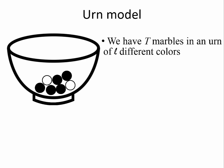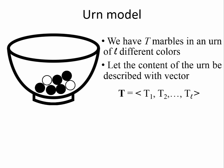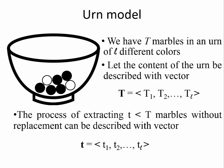Consider an urn containing big T marbles of L different colors. The content of the urn can be described by vector big T, where each component is the number of marbles of the corresponding color. The process of extracting marbles from the urn without replacement can be described by small t vectors where each component is the number of extracted marbles of the corresponding colors.